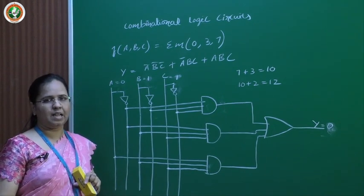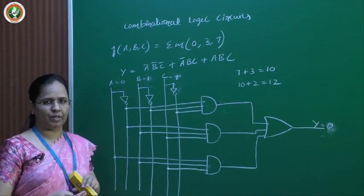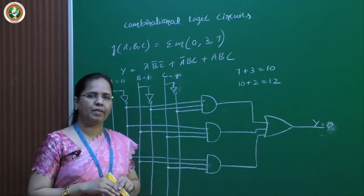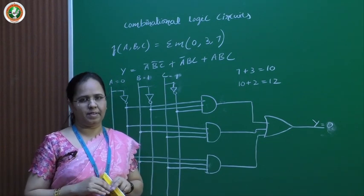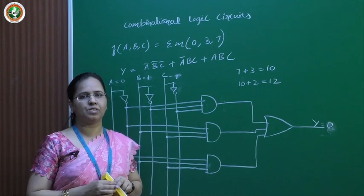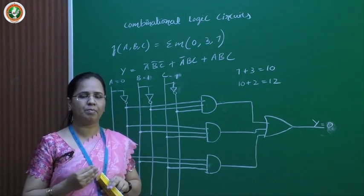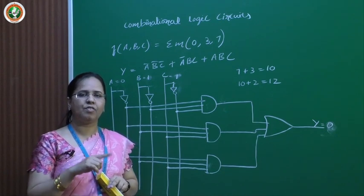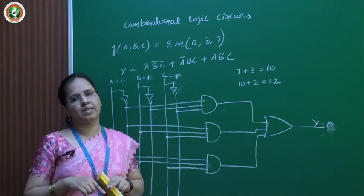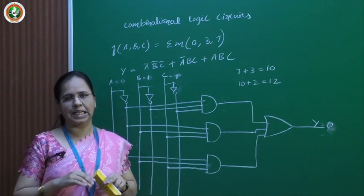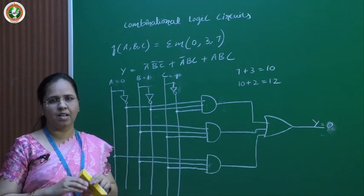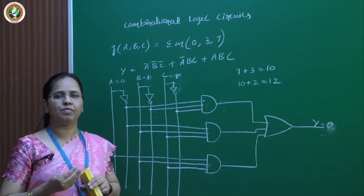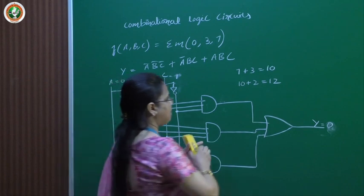To understand sequential circuits, assume we are moving in a lift. On every floor we get the floor number. If we are getting floor number 1, then obviously the previous floor number should be 0. We can tell the floor number is 1 only when we know the previous floor number is 0. In a sequential circuit, the output depends on the present values of inputs as well as the previous values of input.